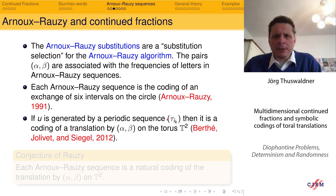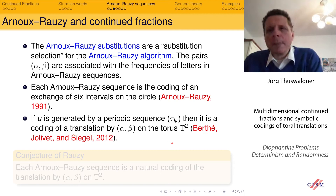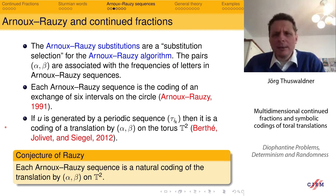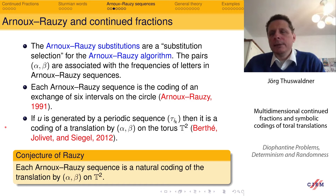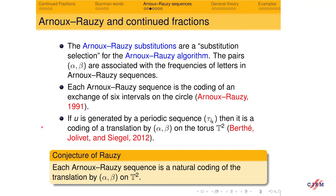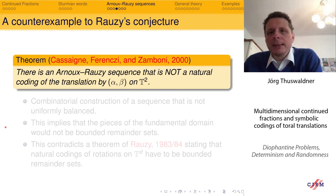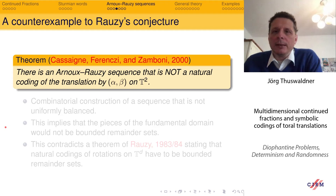A periodic sequence corresponds to a periodic continued fraction expansion, so this is still fairly special. The conjecture of Rauzy was that each Arnoux-Rauzy sequence is a natural coding of a translation by (α, β) on the torus T². Unfortunately, things are not so easy. There is a very nice paper by Cassaigne, Ferenczi, and Zamboni from the year 2000. They proved that the conjecture of Rauzy cannot be true in general — there exists an Arnoux-Rauzy sequence that is not a natural coding of a translation by (α, β) on T².